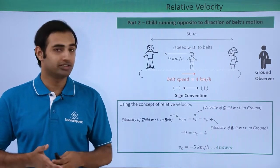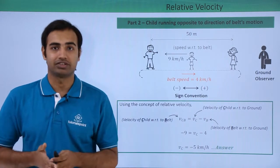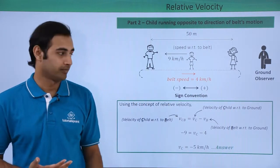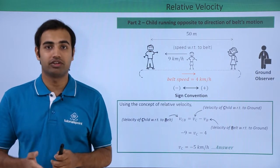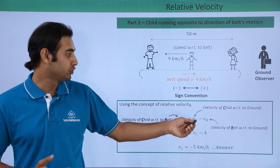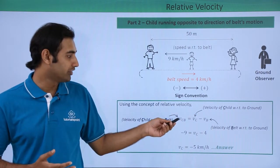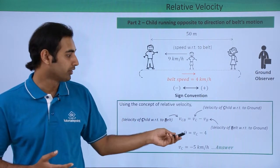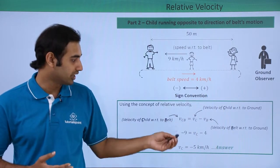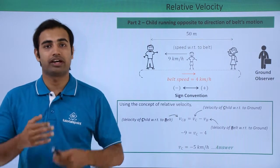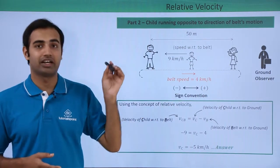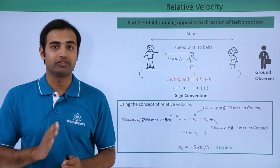For the second part, the child runs opposite to the direction of the belt. The belt is still at +4 km per hour, but the child moves at −9 km per hour with respect to the belt. Writing the relative velocity equation again: −9 = v_child − 4, solving gives v_child = −5 km per hour. So the ground observer perceives the child moving to the left at 5 km per hour.